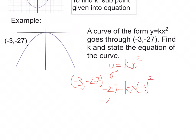So it's going to be -27 is equal to k times 9. That's what (-3) squared is. So divide both sides by 9, and I'm going to get k is equal to -3, which is what I hoped for, because it's a sad curve, so I'd expect k to be negative.